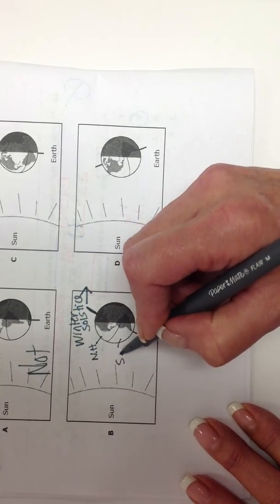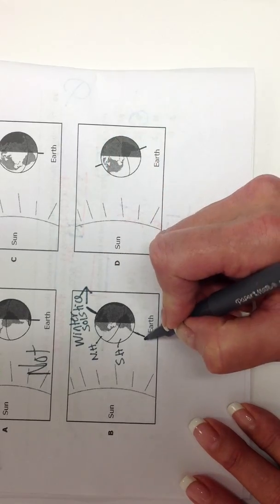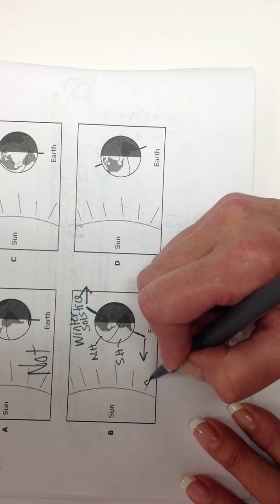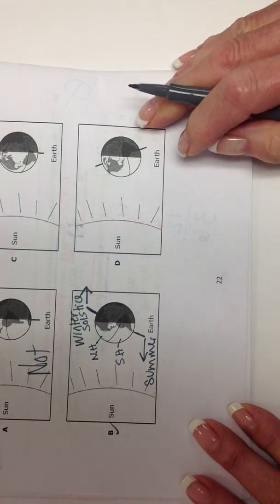Then the southern hemisphere, and we'll double check, look at their pole, their pole, or the south pole is pointing more towards the sun. So they must be having their summer. That is pretty much our answer.